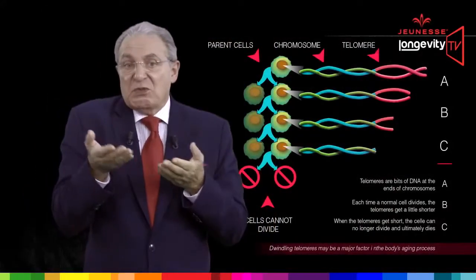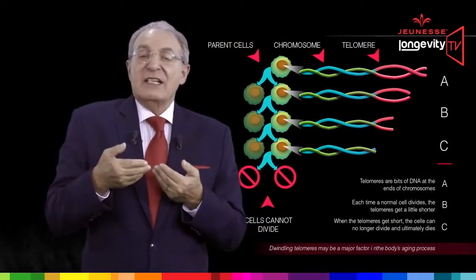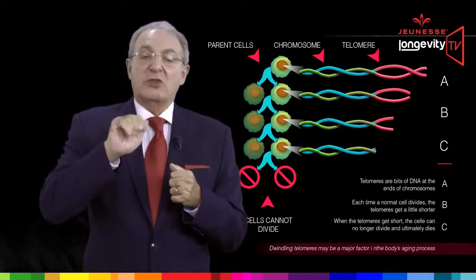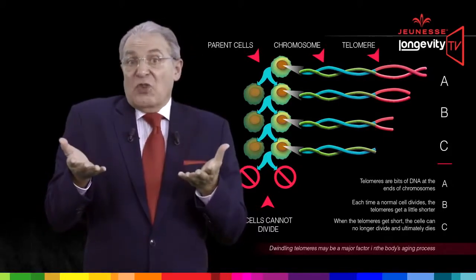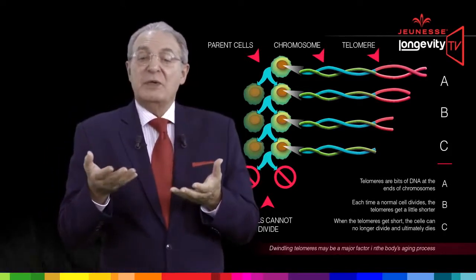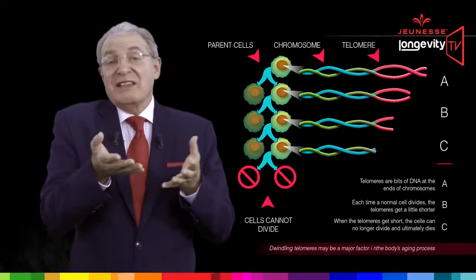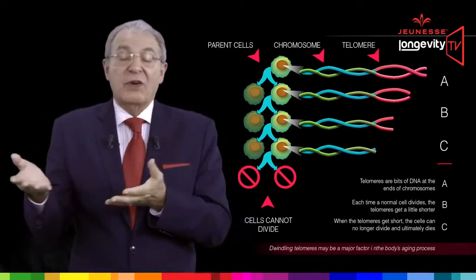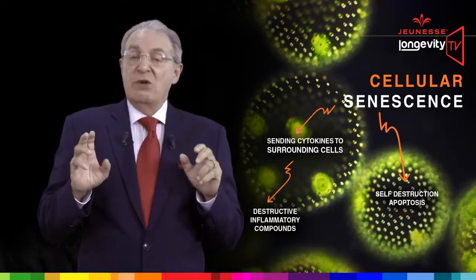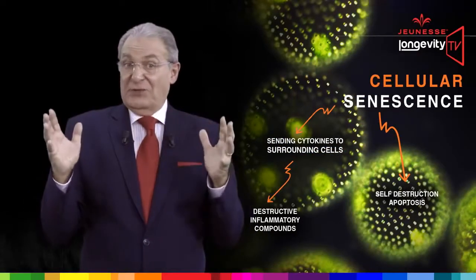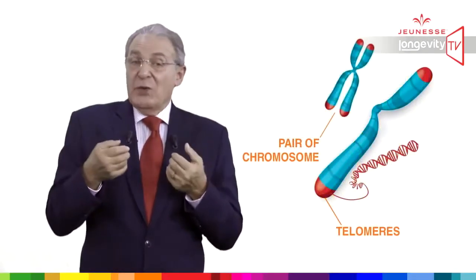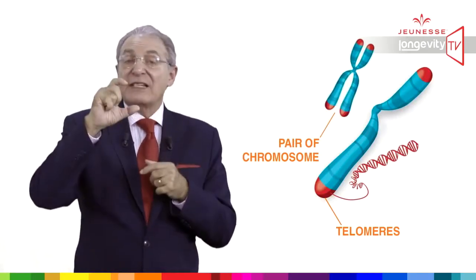After 50 to 70 divisions, the cells in our body reach a stage where there is no more telomere to protect our DNA, so the cells can no longer reproduce themselves. They reach what we call a retirement-like state in which they die or no longer divide. This endpoint is called senescence, and when senescence reaches a majority of cells, we die of old age.